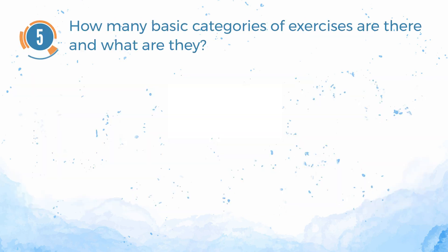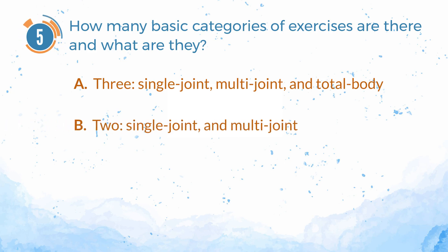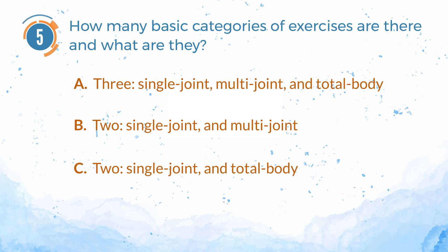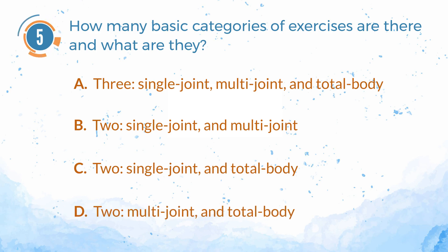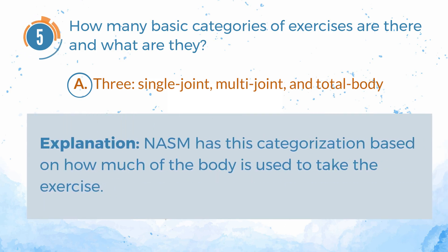Number 5. How many basic categories of exercises are there and what are they? A. 3: Single joint, multi-joint, and total body. B. 2: Single joint and multi-joint. C. 2: Single joint and total body. D. 2: Multi-joint and total body. The answer is A. 3: Single joint, multi-joint, and total body. Explanation: NASM has this categorization based on how much of the body is used to perform the exercise.